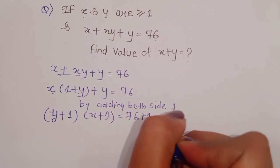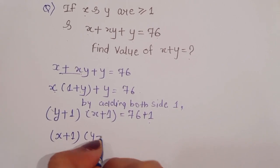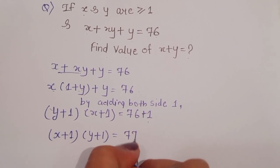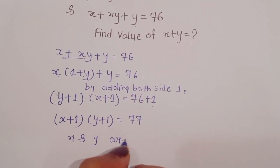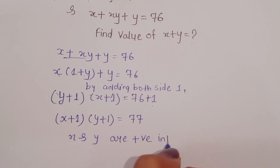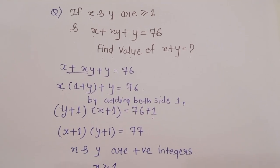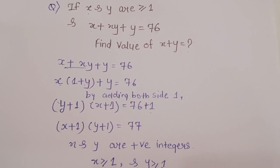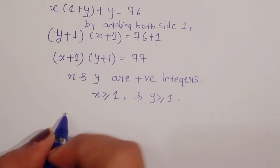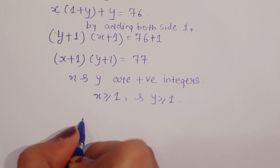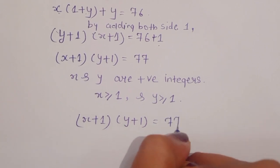By adding 1 to both sides, we get (x plus 1) times (y plus 1) is equal to 77. Now, x and y are positive integers, meaning x is greater than or equal to 1 and y is greater than or equal to 1.